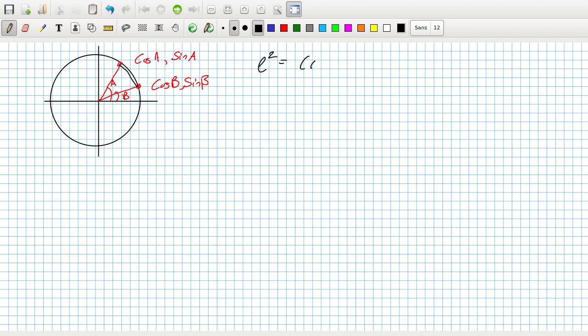Using coordinate geometry formula, the distance between them, L squared, is (cos B - cos A) squared plus (sin B - sin A) squared. So that will be cos squared B minus 2 cos A cos B plus cos squared A plus sin squared B minus 2 sin A sin B plus sin squared A.